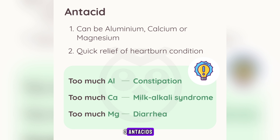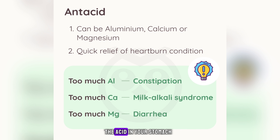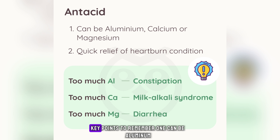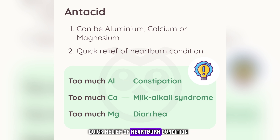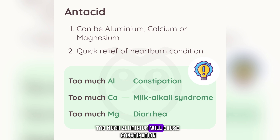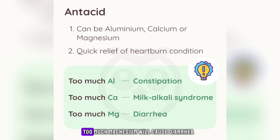Antacids are medicines that counteract or neutralize the acid in your stomach, used to relieve indigestion and heartburn. They can be aluminum-, calcium-, or magnesium-based, and provide quick relief of heartburn. Important to remember: too much aluminum will cause constipation, too much calcium will cause milk-alkali syndrome, and too much magnesium will cause diarrhea.